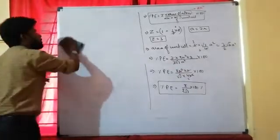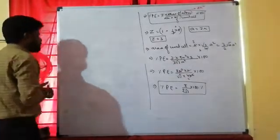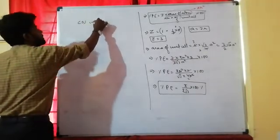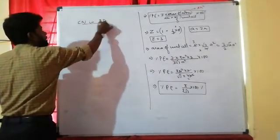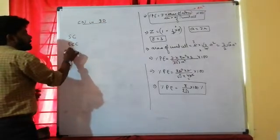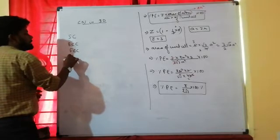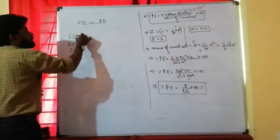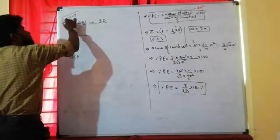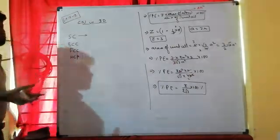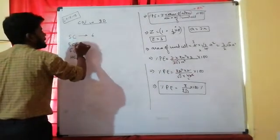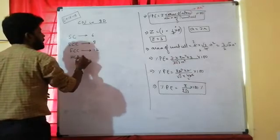Now the topic turns to coordination number in 3 dimensions. We have already studied Simple Cubic, BCC, FCC, and HCP in lectures 15–19 of Solid State. Simple Cubic has coordination number 6, BCC has coordination number 8, and FCC has coordination number 12.